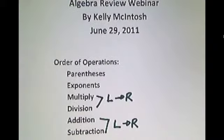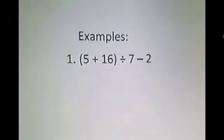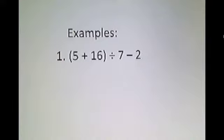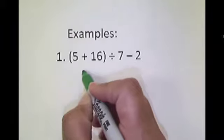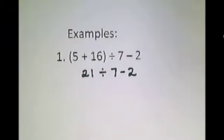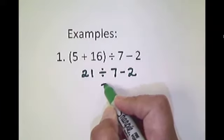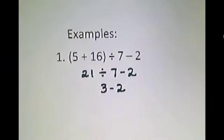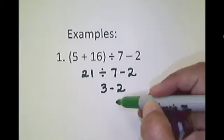So let's start with some examples. The first example has a set of parentheses in it, and we are going to solve what's inside those parentheses first. 5 plus 16 gives us 21. The next order of operations step that we are going to complete, we have no exponents or multiplication, but we do have division. So we're going to take 21 divided by 7, so that gives us 3. And the last thing that we have, the last operation, is subtraction. So 3 minus 2 is 1.